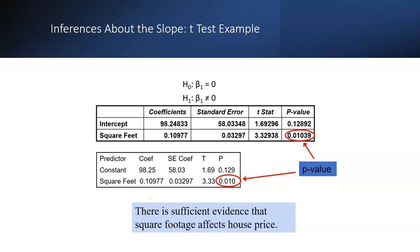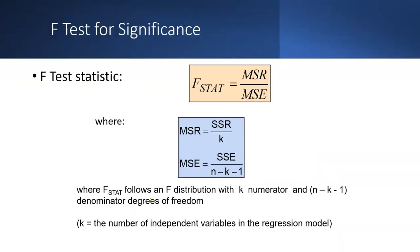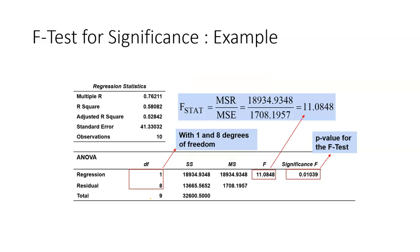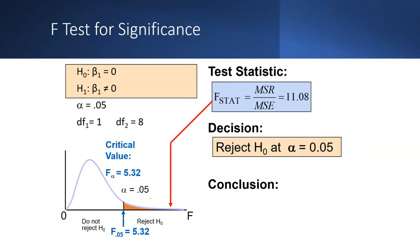The F-test checks for significance — whether the values are significantly important. The F-statistic equals MSR divided by MSE. These are all based on the error terms. From the F-test output you can see the p-value for the F-test and determine whether the result is significant or not. According to the one-tail test, if the value falls within the tail, you reject the hypothesis; otherwise you do not.